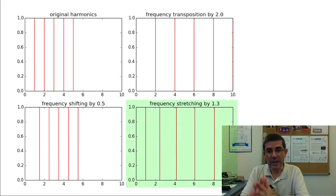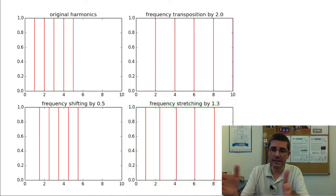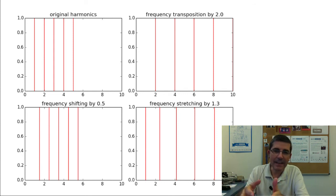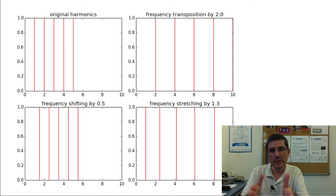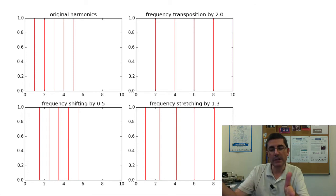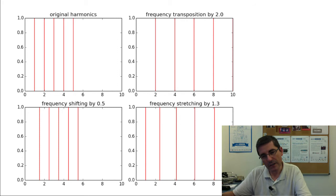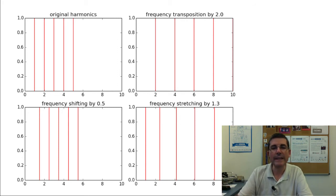The frequency stretching operation is quite different — it changes the distance between the harmonics like an accordion. A stretching factor of 1.3 means the fundamental is not touched, the first harmonic is stretched by 1.3, and higher harmonics are affected by powers of this factor, so the distance between harmonics increases kind of exponentially as we go higher. This creates quite interesting effects.